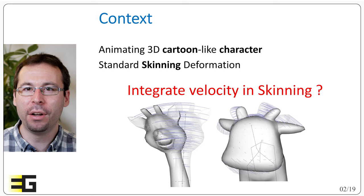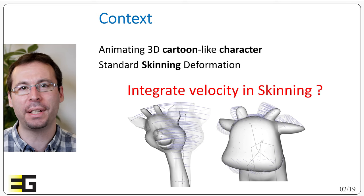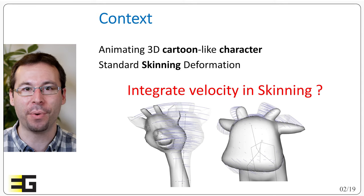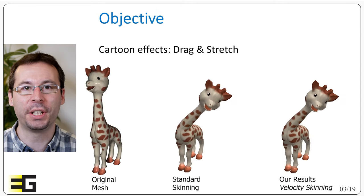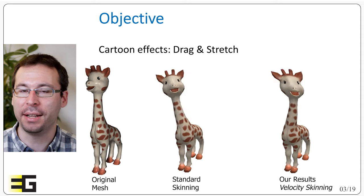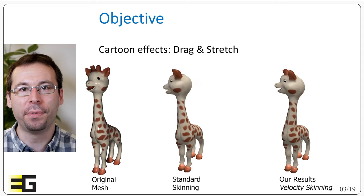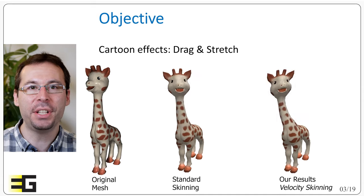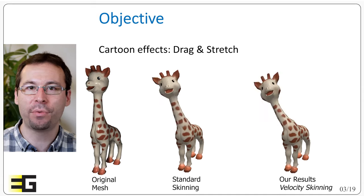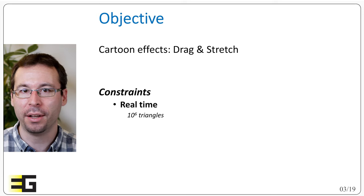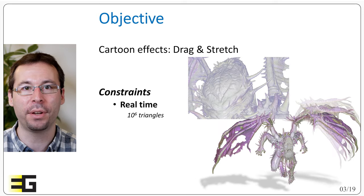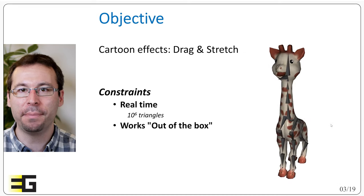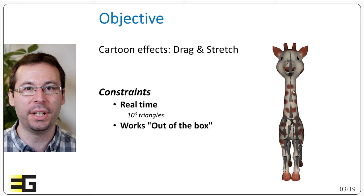In particular, can we leverage all the information that are already available from the rig to generate them automatically and in an efficient way? And so this is our objective. We target a method that can mimic this cartoon-style deformation, and we are going to focus on drag and stretch effects. We would like to share the same advantages as skinning. Namely, first we want an extremely efficient method, meaning remaining real-time up to some millions of triangles on standard machine.